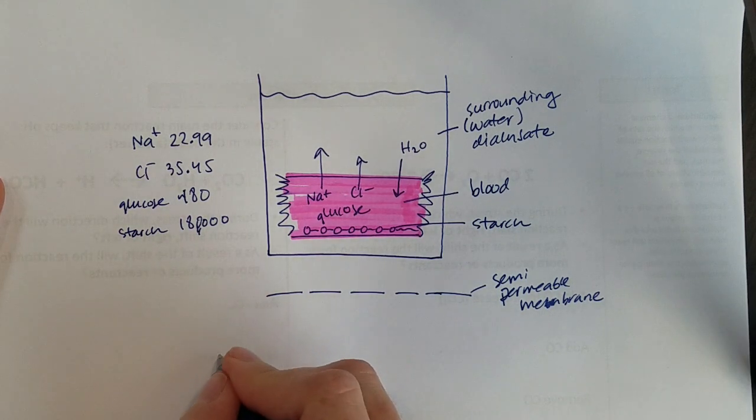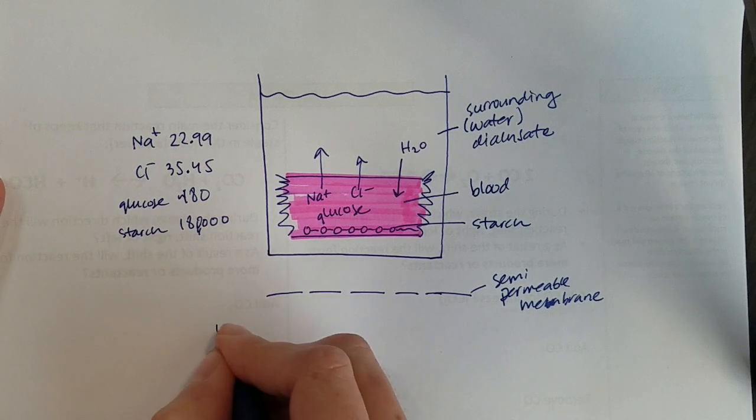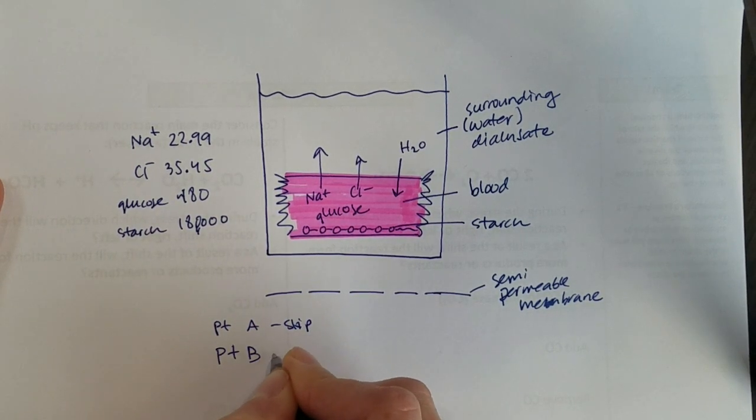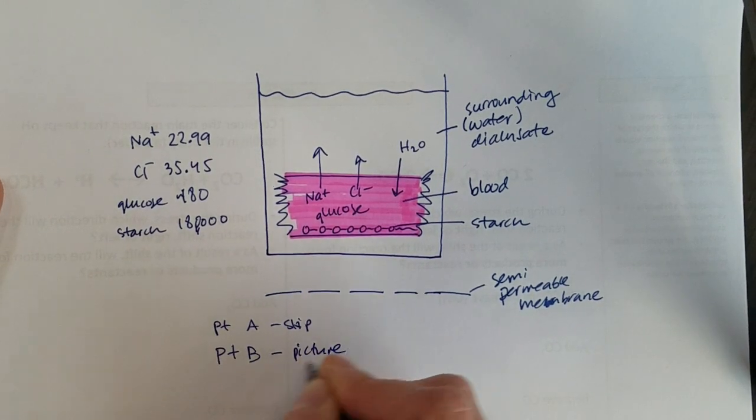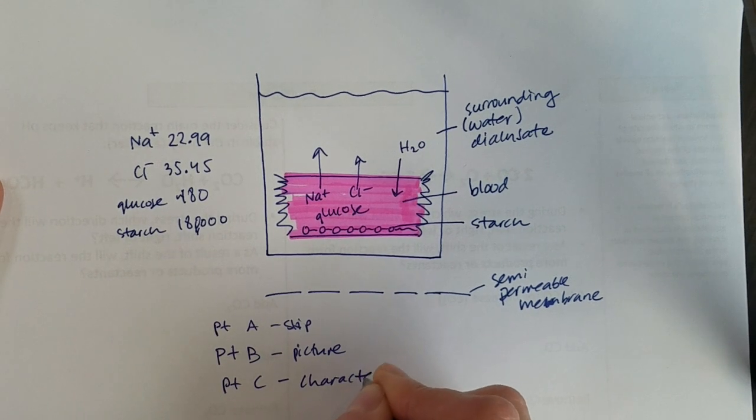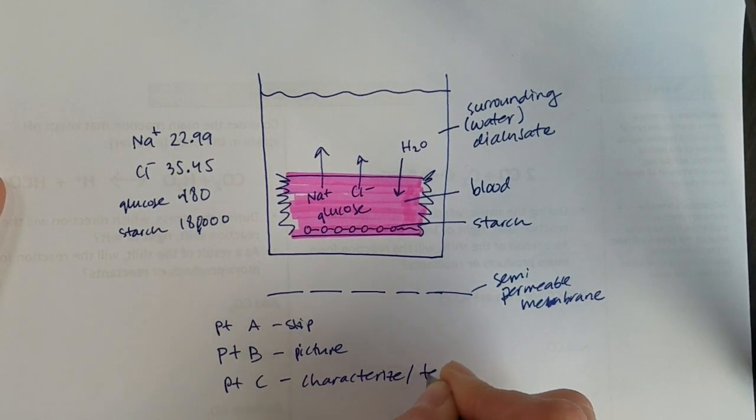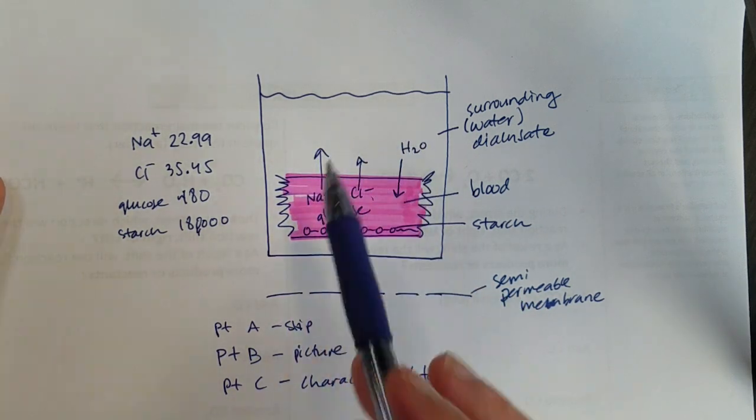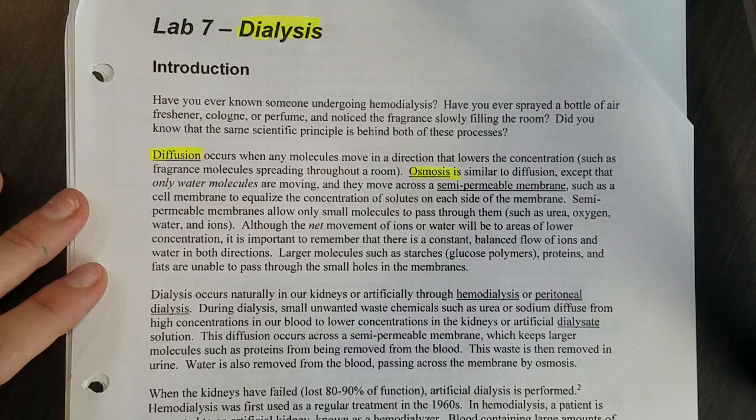We're going to be skipping part A today, but for part B it will be as you see in the picture here, and then in part C we will characterize or test our blood and also the surroundings to see what moved into those surroundings.